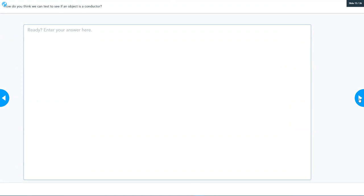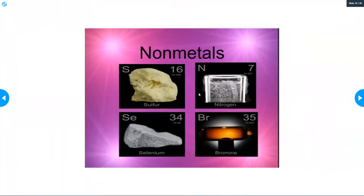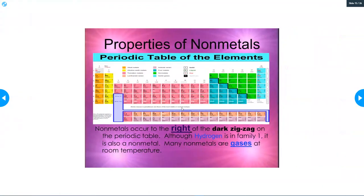Now we're on to nonmetals. All your nonmetals are going to be on the right hand side of the periodic table. I think there's one - hydrogen is on the left hand side. So you're going to look at these four elements here. As you can see, the nonmetals occur to the right of the zigzag. The only one that's not is hydrogen, which is up here on the left. Many nonmetals are gases at room temperature.